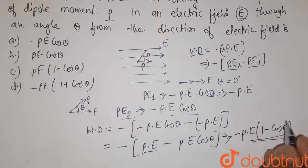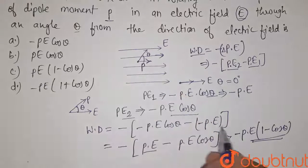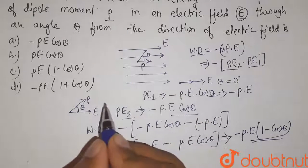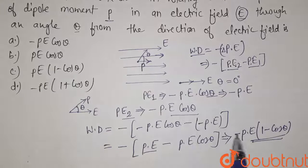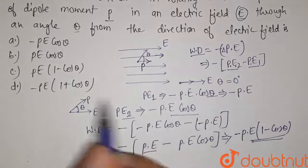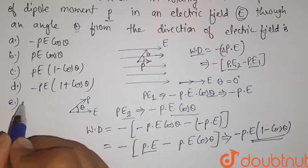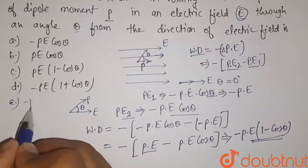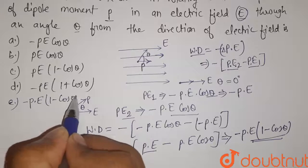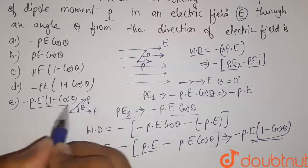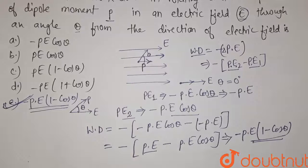So this is the value of work done in rotating the dipole by angle theta. Now let us check the options. None of the given options match this value, so all the provided options are wrong. The correct answer for this question is minus p times E times (1 minus cos theta). Thank you.